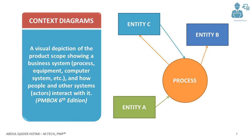According to the 6th edition of PMBOK, context diagrams visually depict the product scope by showing a business system. That business system could be a process, equipment, computer systems, or similar. And how other people, actors, or systems interact with this business system.